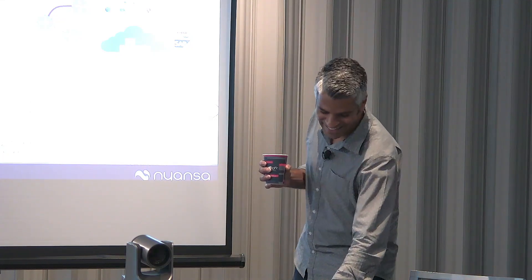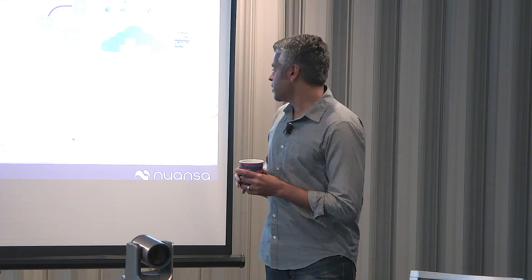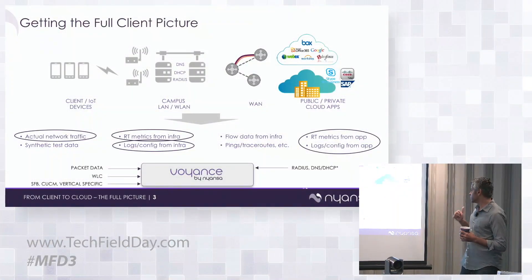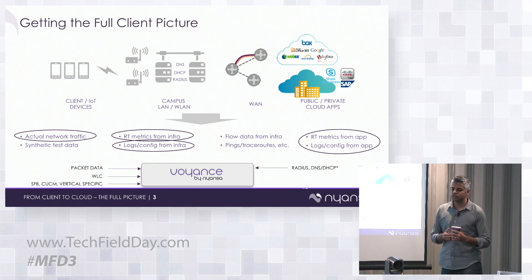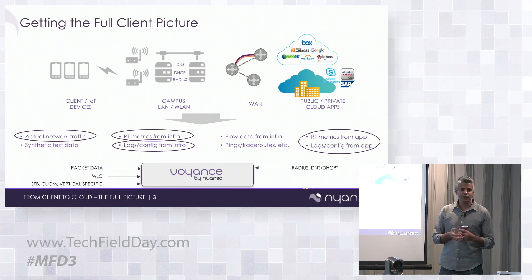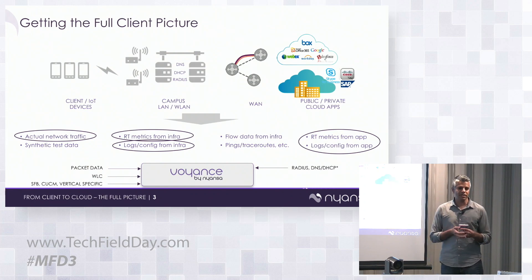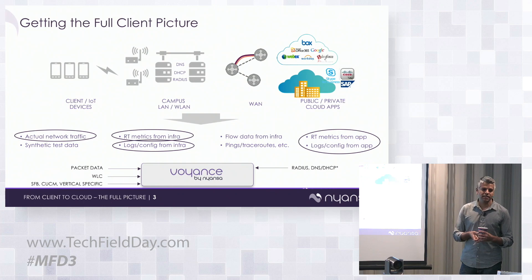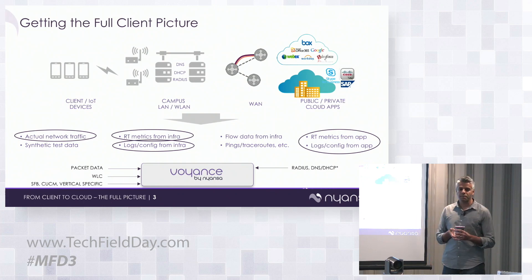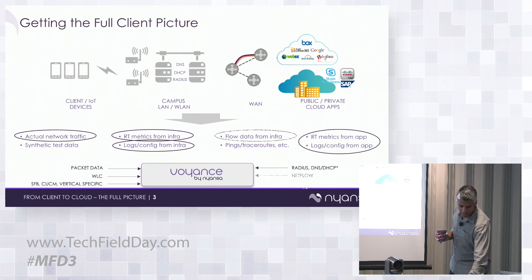The better data we get the better the platform performs — we can't make up data. On syslog, we've added support for ISE, ClearPass, FreeRADIUS, and Microsoft RADIUS, so you can point syslog at us and that syslog contains extra information from the RADIUS server around reason codes and things like that which we can correlate with the rest of the data. We're also working on DNS and DHCP support with Infoblox and BlueCat.